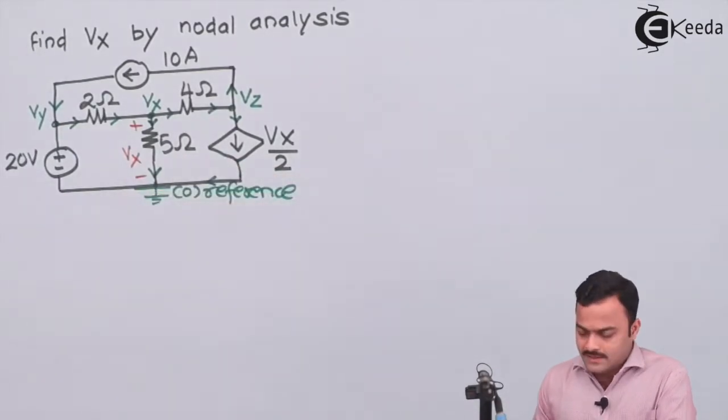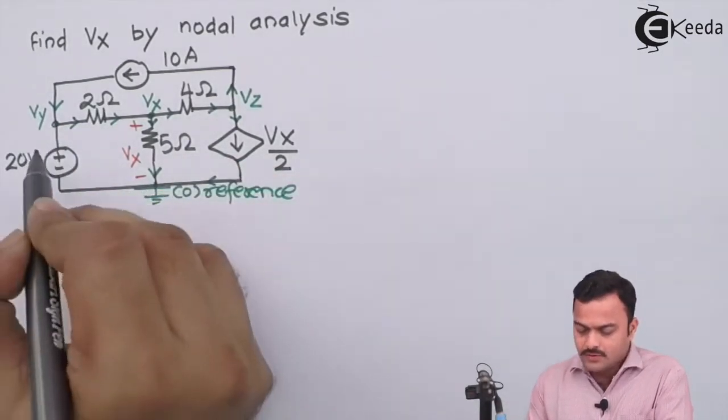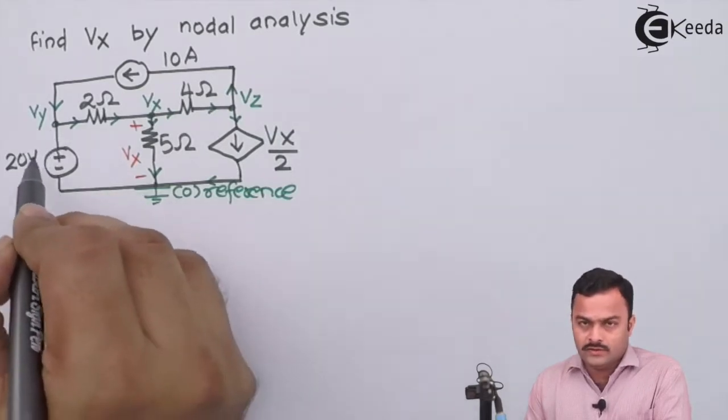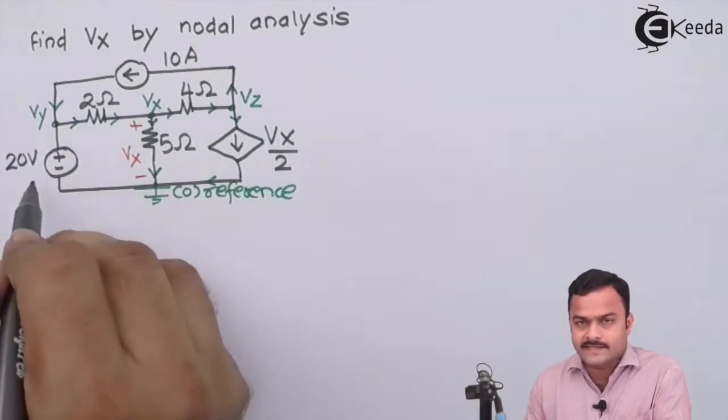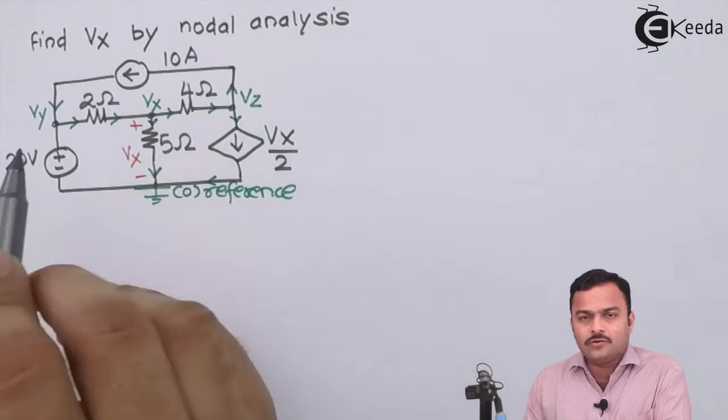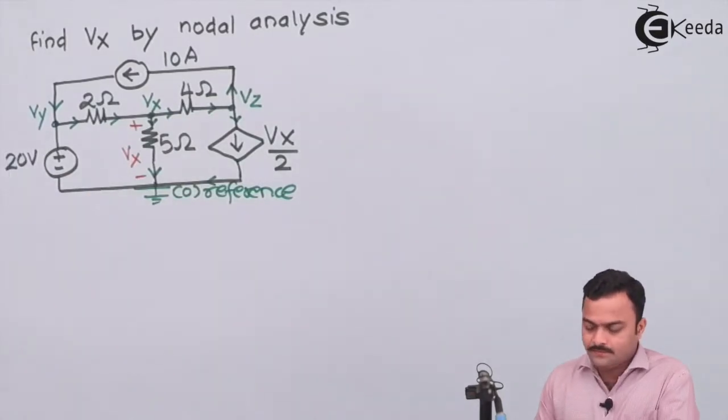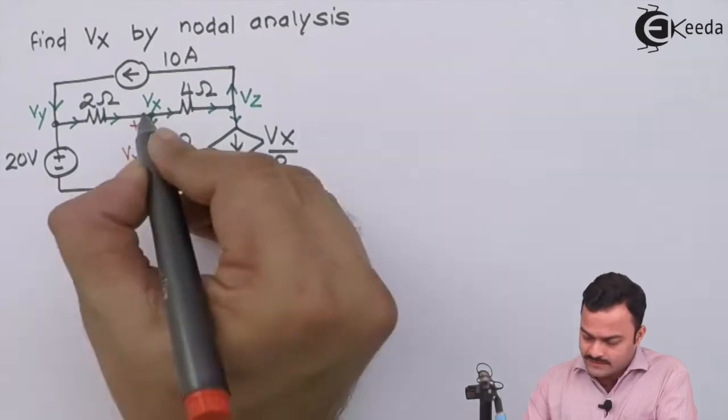So all the branches got the current except this Vy, because there only voltage is present, no resistance. Hence I'm not marking the current direction for this. Here we will get a voltage directly, that we will see later on. Let's apply KCL at node X.